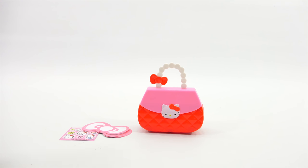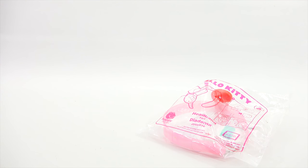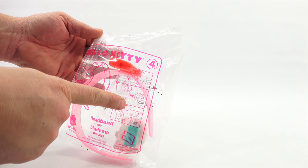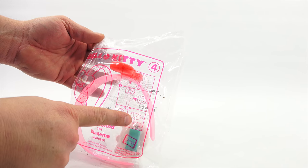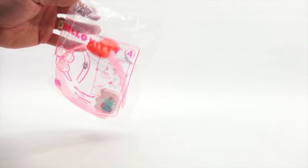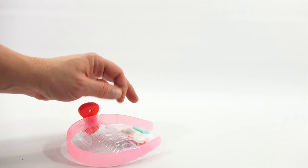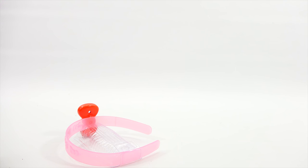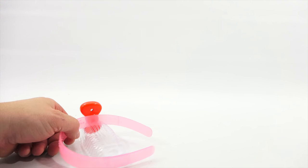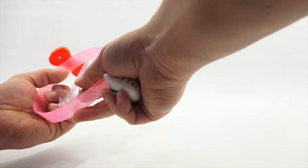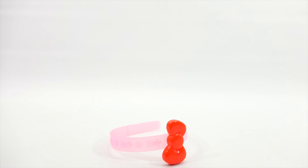All right number four is the headband. Okay, see the girl right there. She's got it around her head. You can remove the kitty part and clip that on your pocket. So it's a two-in-one accessory. There's the little clip, so it can clip on.